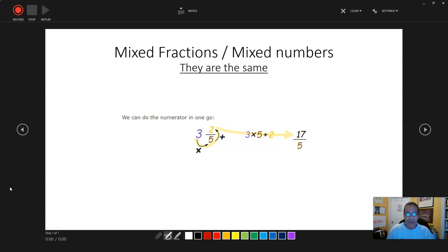So three times five plus two. That is going to turn your mixed fraction into an improper fraction. And when we're calculating in math, you always want to use improper fractions whenever possible. It makes life so much easier.